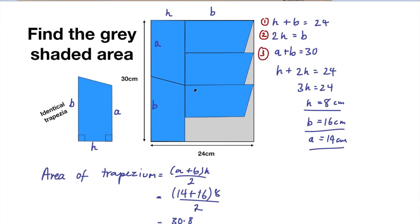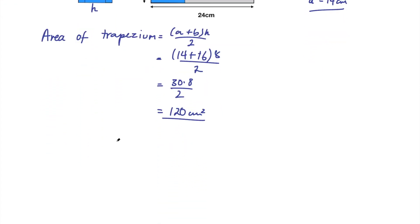Remember that's the area of 1 trapezium and we have 5 of those inside this rectangle. So what I want to do is work out the area of 5 of those trapezia. So then we're going to do 120 multiplied by 5 which is 600 centimeters squared.